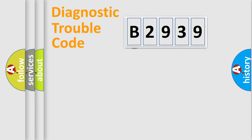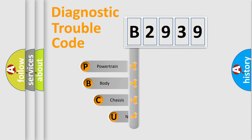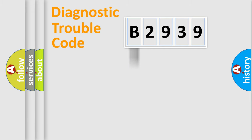Let's do this. First, let's look at the history of diagnostic fault code composition according to the OBD2 protocol, which is unified for all automakers since 2000. We divide the electric system of the automobile into four basic units: Powertrain, Body, Chassis, and Network.